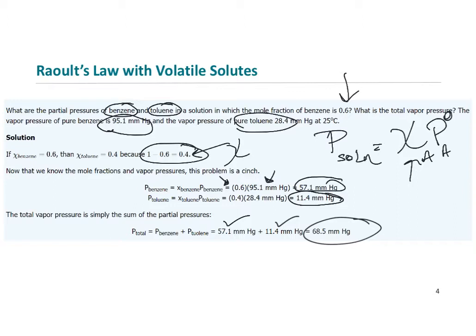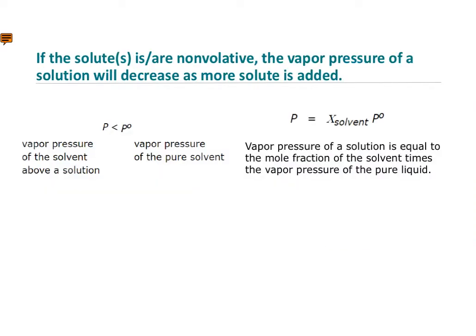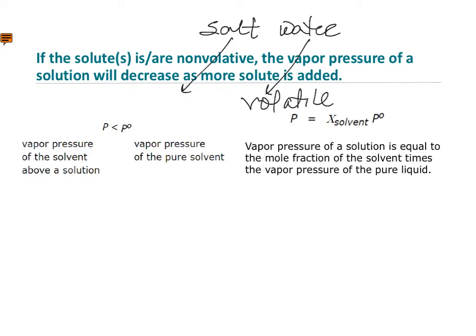Most of the time, there will only be one volatile part of a solution — the solvent itself — so you're most likely to encounter Raoult's Law with only one volatile component. Take salt water, for example. The only volatile component is water. Salt, which is a solid, is non-volatile, so it's not going to contribute to the vapor pressure of the solution and is left out of Raoult's Law.